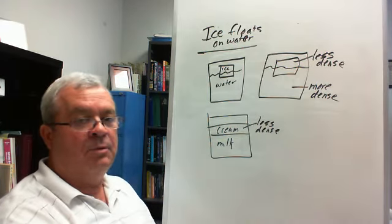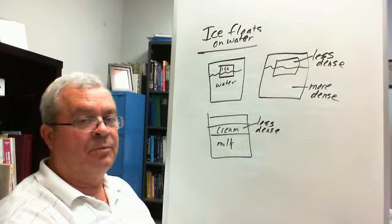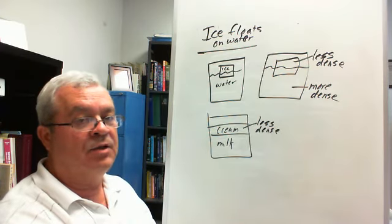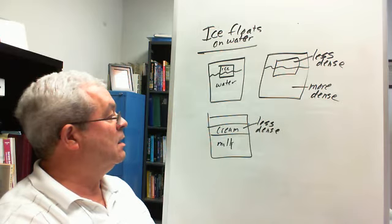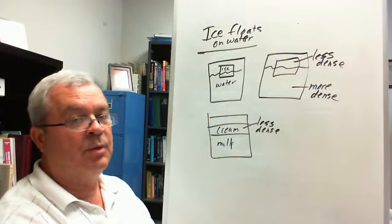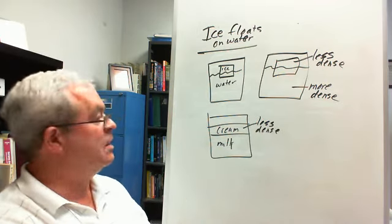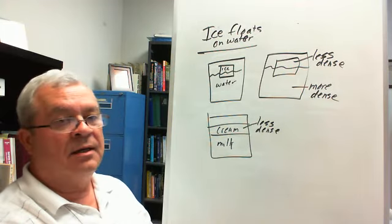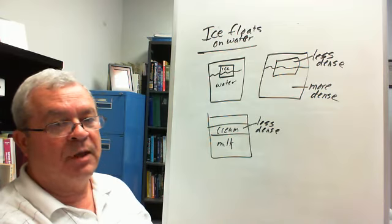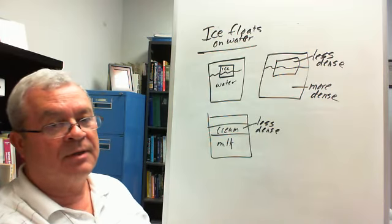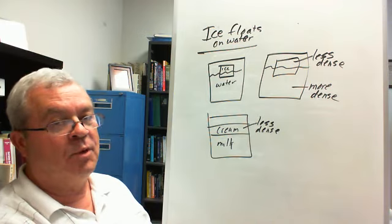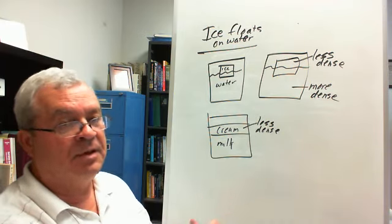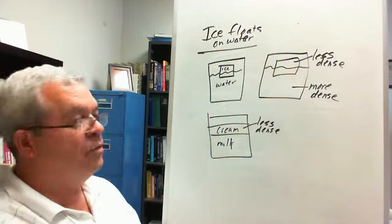Less dense always floats on top of more dense. So how come when you buy milk at the grocery store it doesn't separate out? A process called homogenization. And so the cream's in there but it's been somehow mixed up so it doesn't separate, unless you have skim milk there's no cream. And if you buy 2% milk how much of the cream has been taken off? Half of it, because all of it's 4%. 4% of the whole thing is cream if you leave it to yourself. 2% half has been taken off and so forth.